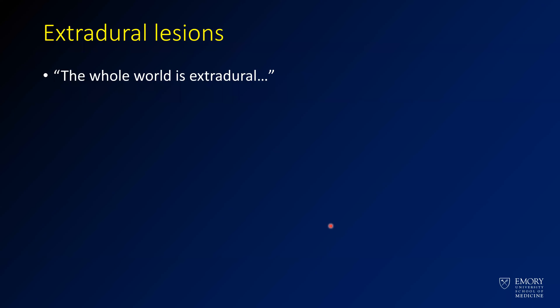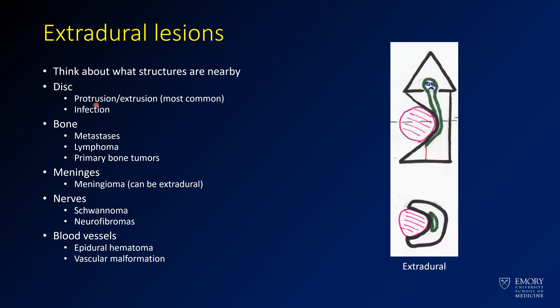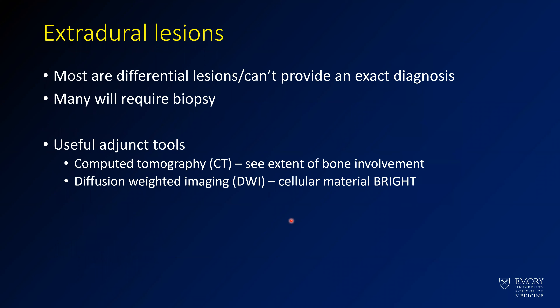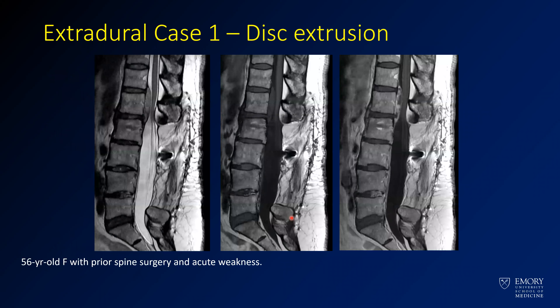Finally, we'll go through extradural lesions. It's been said that the whole world is extradural — everything not in the spinal canal is outside it. Discs are extradural, so protrusions, extrusions, and disc infection are extradural. Bone lesions, lymphoma from bone, meningiomas, schwannomas, and neurofibromas starting peripherally can all be extradural. Vascular malformations can be extradural as well. For extradural lesions, it can be very difficult to find an exact diagnosis — many will have to be biopsied. CT is a great tool, especially for bone lesions. DWI can also be helpful since highly cellular material tends to restrict diffusion.